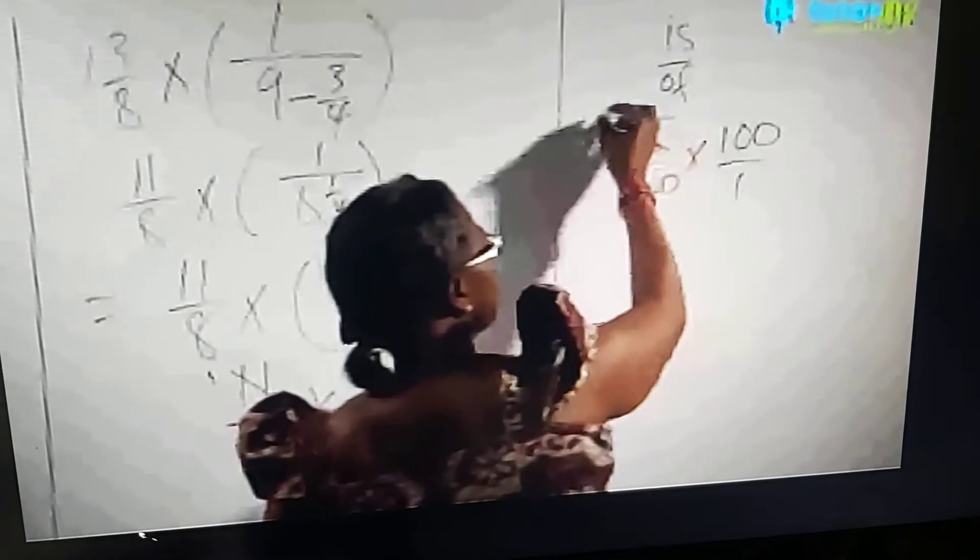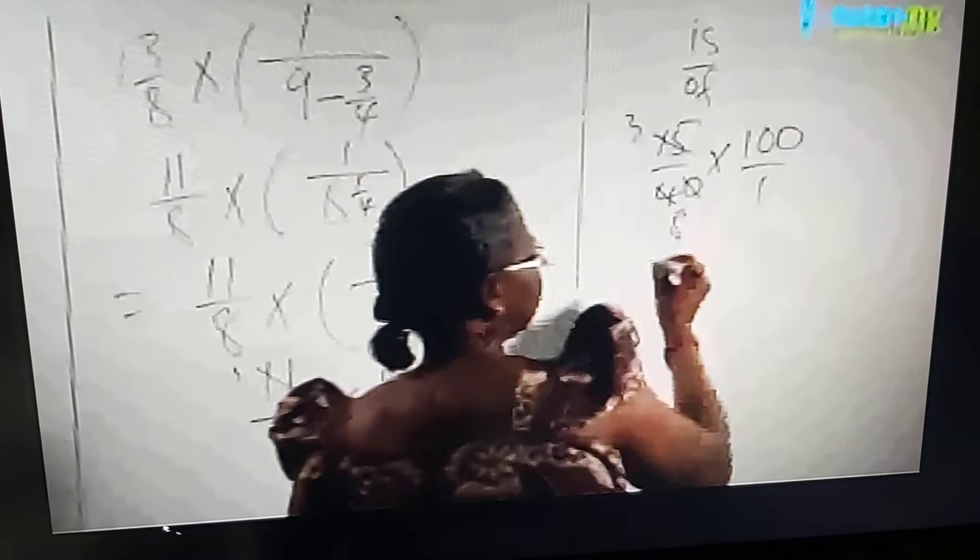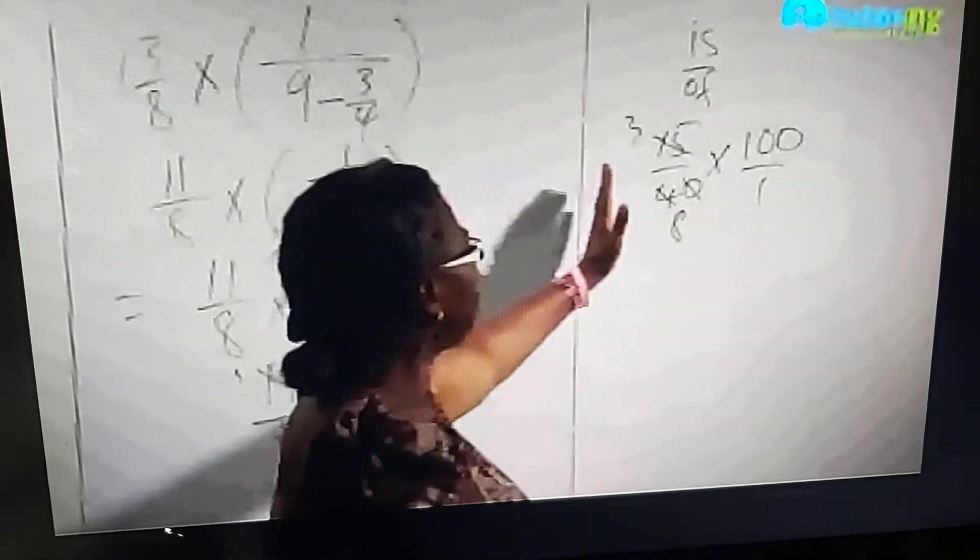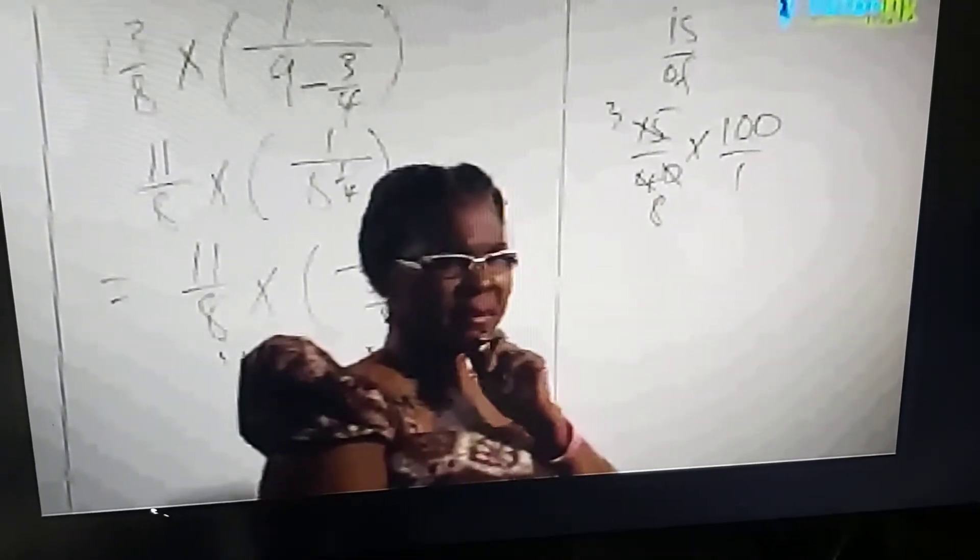Leave the 100. 5 into 15 is 3. 5 into 40 is 8. Now we can simplify. 3 over 8 - what is that as a decimal?